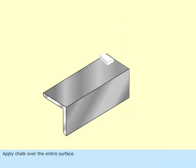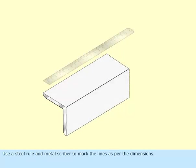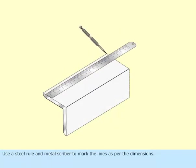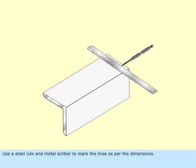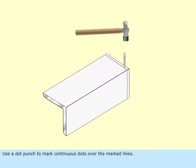Apply chalk over the entire surface. Use a steel rule and metal scriber to mark the lines as per the dimensions. Use a dot punch to mark continuous dots over the marked lines.